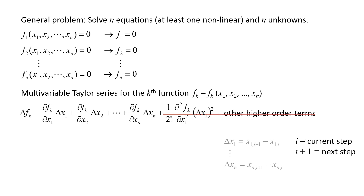For example, delta x1 is the difference between the next estimate for x1, labeled x1 i plus 1, and the current value for x1, labeled x1 i. Delta xn is the difference between the next estimate for xn, labeled xn i plus 1, and the current value for xn, labeled xn i. Delta fk is equal to fk i plus 1 minus fk i.